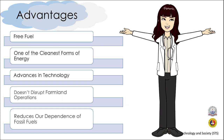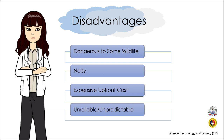Wind energy doesn't disrupt farmland operations and reduces our dependence on fossil fuels. The disadvantages of wind energy include: it is dangerous to some wildlife — flying birds and bats whose habitats or migratory paths intersect with turbine blades can be injured or killed. Wind turbines can also be quite noisy, which is why they are mostly found in rural areas. There is also an expensive upfront cost. And finally, it is unreliable or unpredictable, because wind energy suffers from intermittency — a disruption caused by the inconsistency of the wind itself.